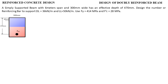A simply supported beam with 6-meter span and 300 mm wide has an effective depth of 470 mm. Design the number of reinforcing bars to support a dead load of 36 kN/m and live load of 50 kN/m. Use Fy = 414 MPa and F'c = 28 MPa.